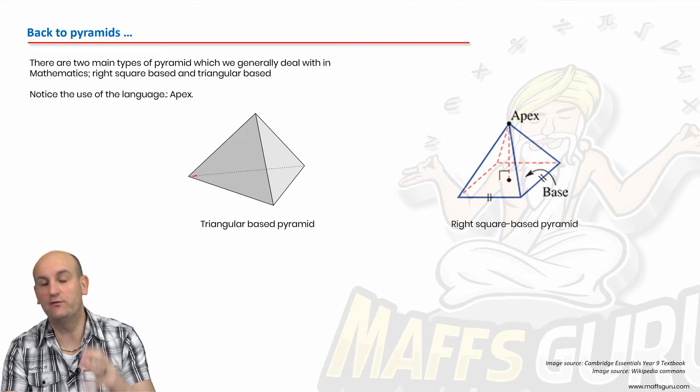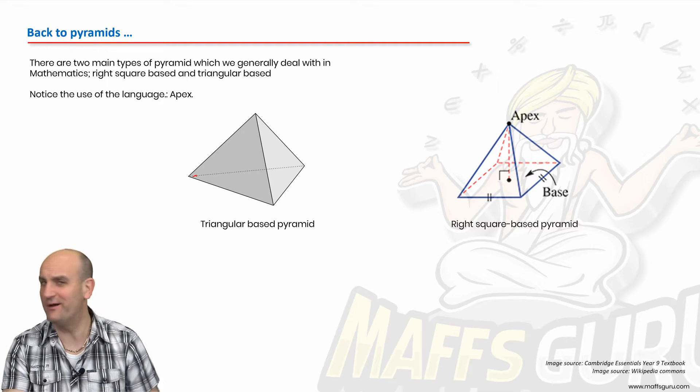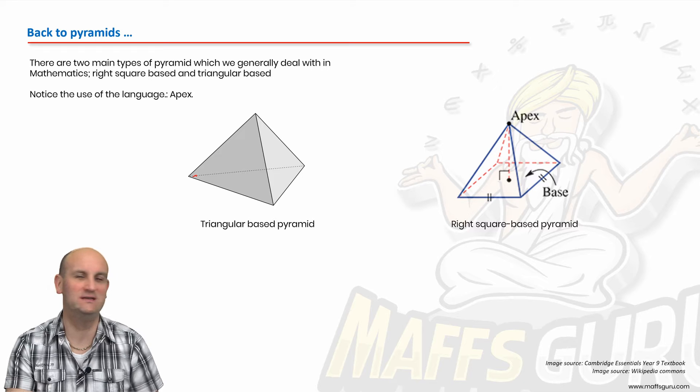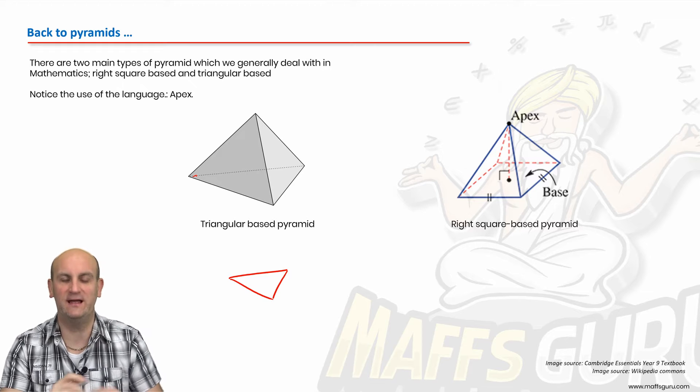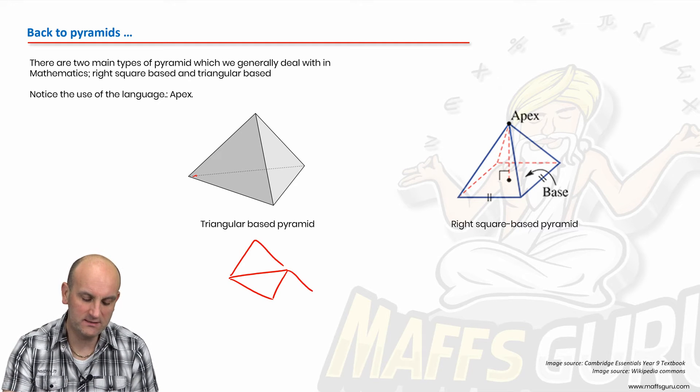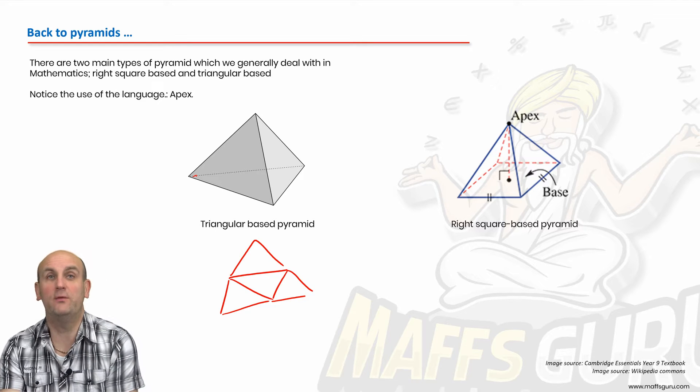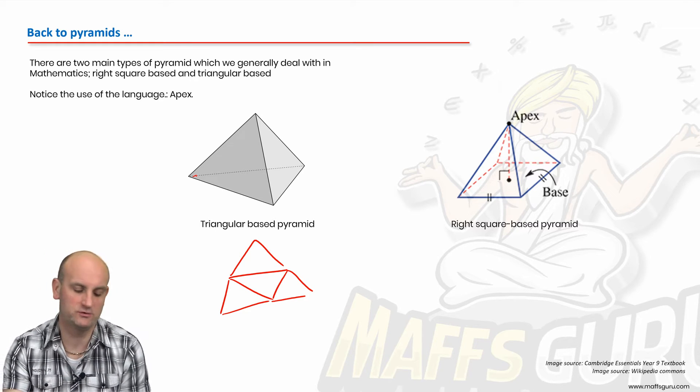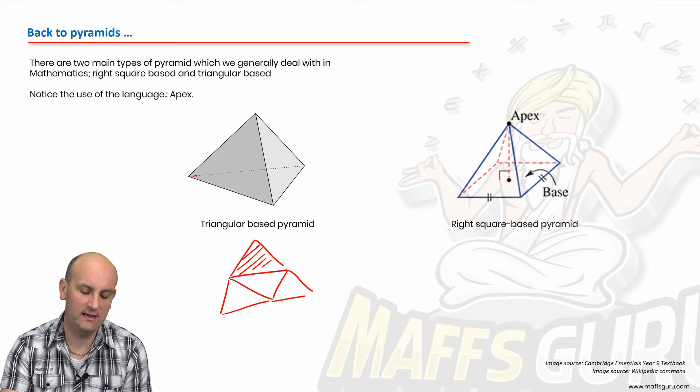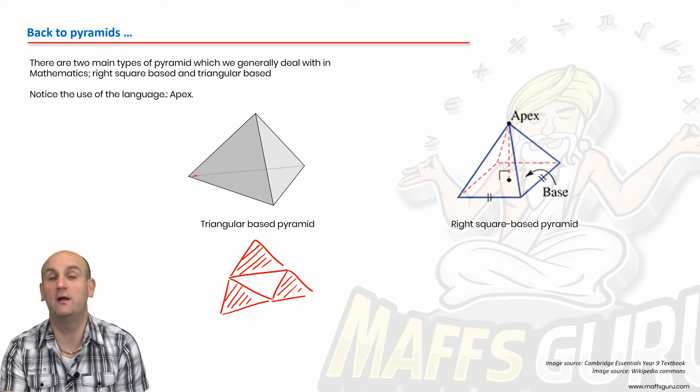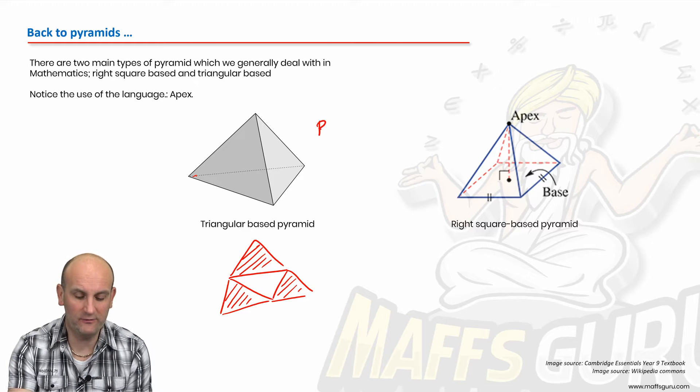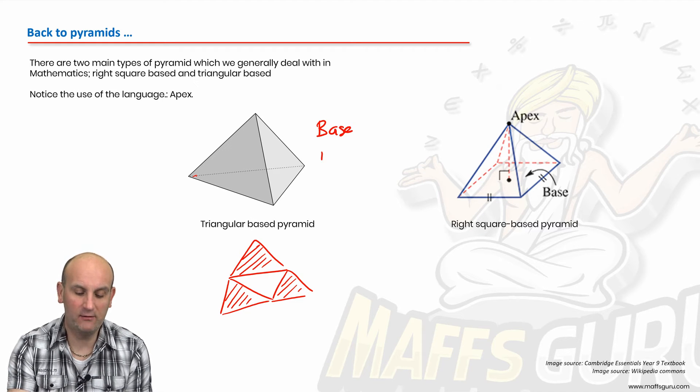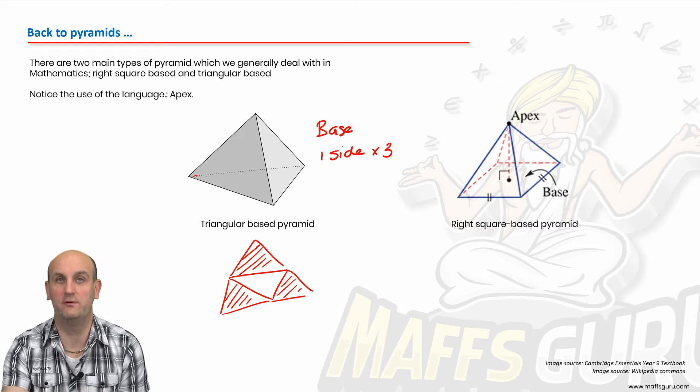Finding the area of these things is great if we know what the base shapes are. What is a net? If I was to actually draw this as a flattened shape, that would be my base, there would be one side, another, and another. The good thing about most of the pyramids we're going to do is that this area here and that area there and that area there are generally going to be the same. So working out the surface area, all I need to do is work out the area of the base, work out the area of one side, and then multiply that by three.